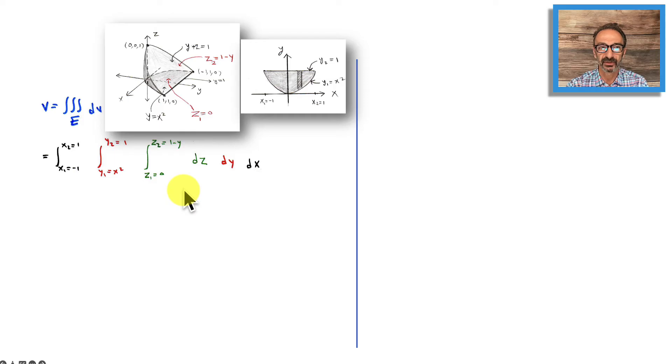But the normal way is we go z1 to z2, and down below I'm going to go from y1 to y2, then finally from x1 to x2, and that should do it.